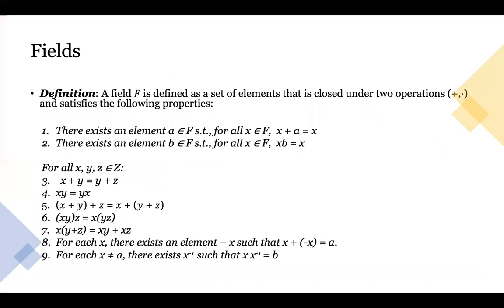Next concept: fields. A field F is a set of elements that is closed under addition and multiplication and satisfies the following nine properties. First, there should be an element A such that for all x belonging to F, x plus A equals x. And there should be an element B such that for all x belonging to F, x times B equals x. There are also some other properties for all x, y, z in the given set that need to be satisfied.